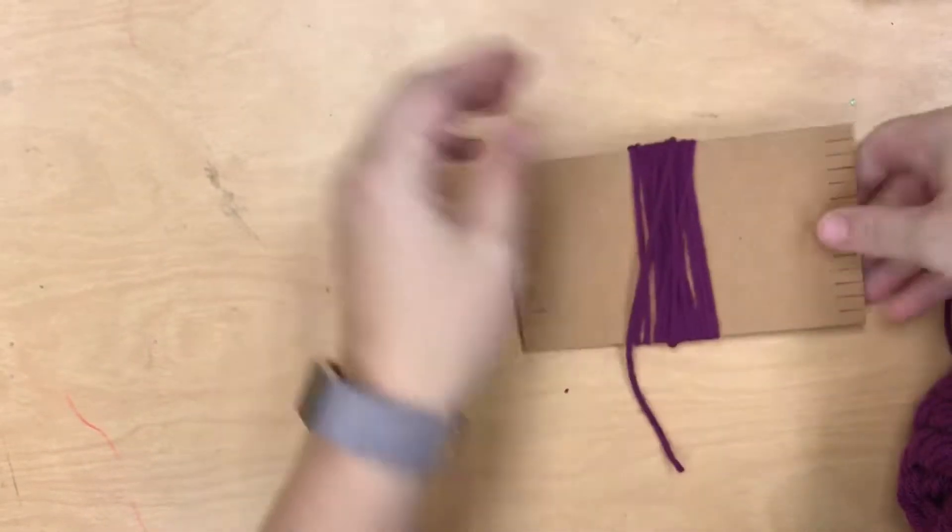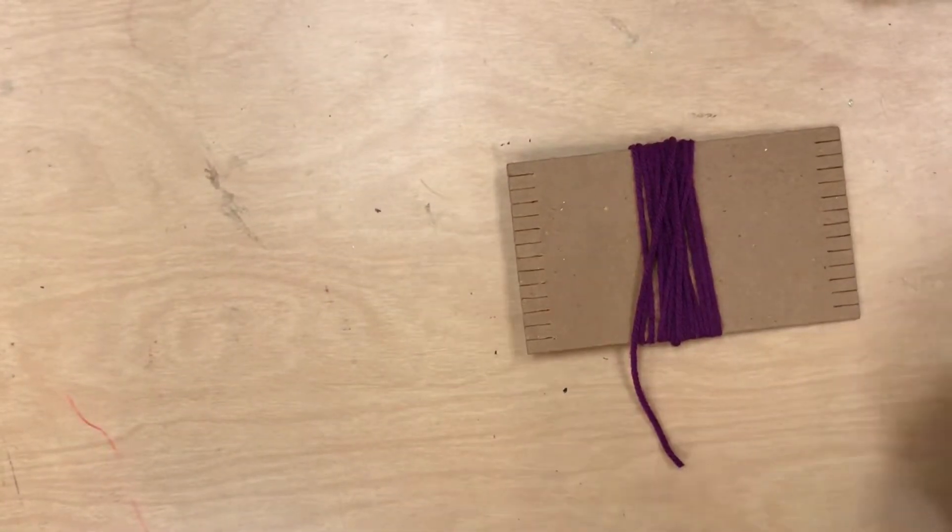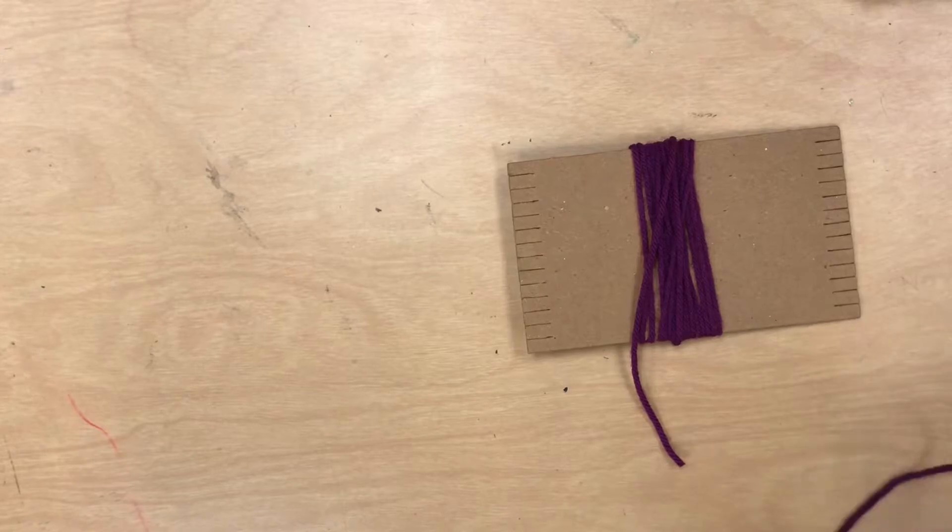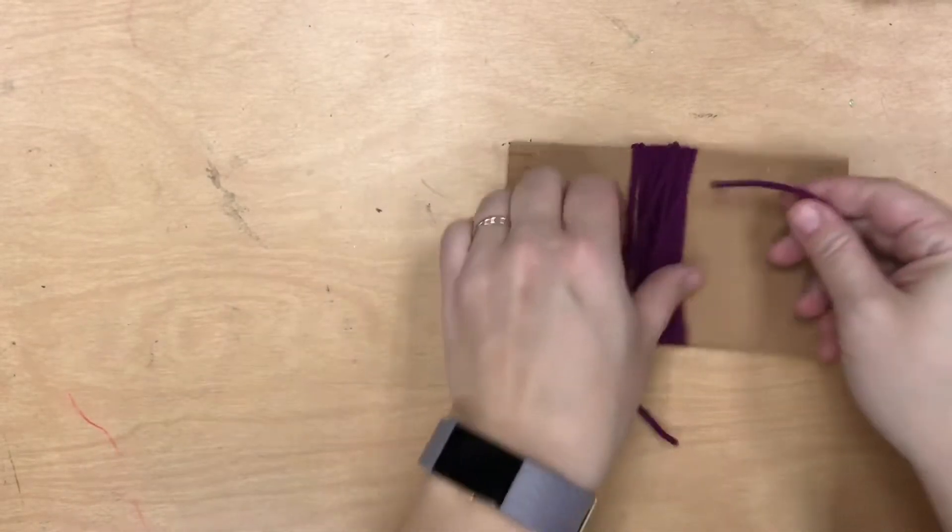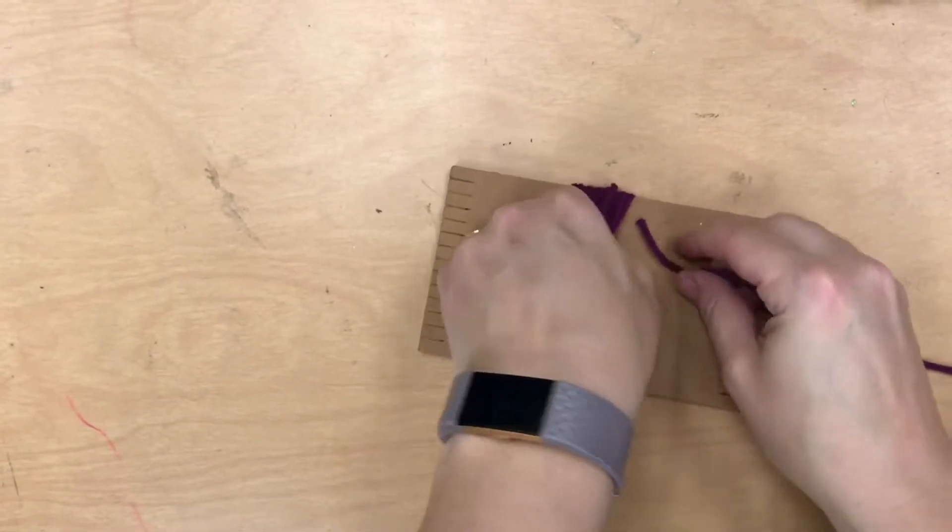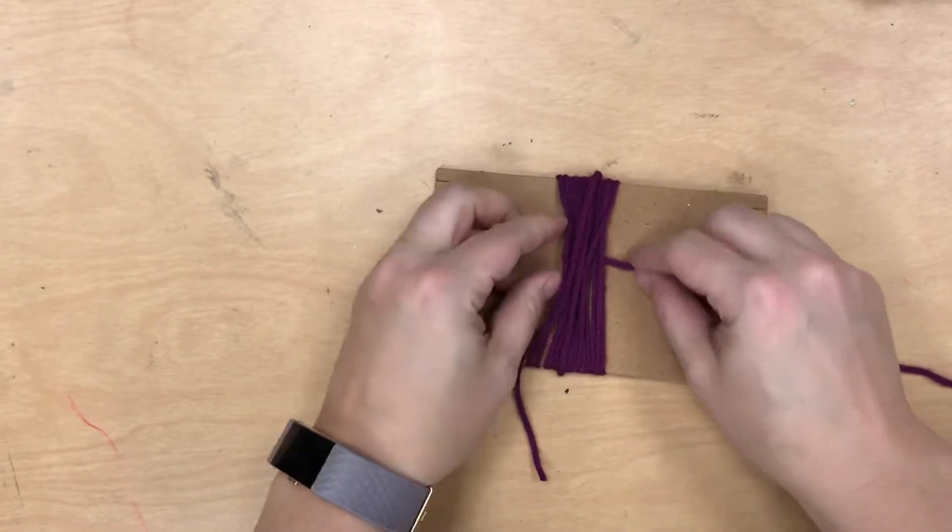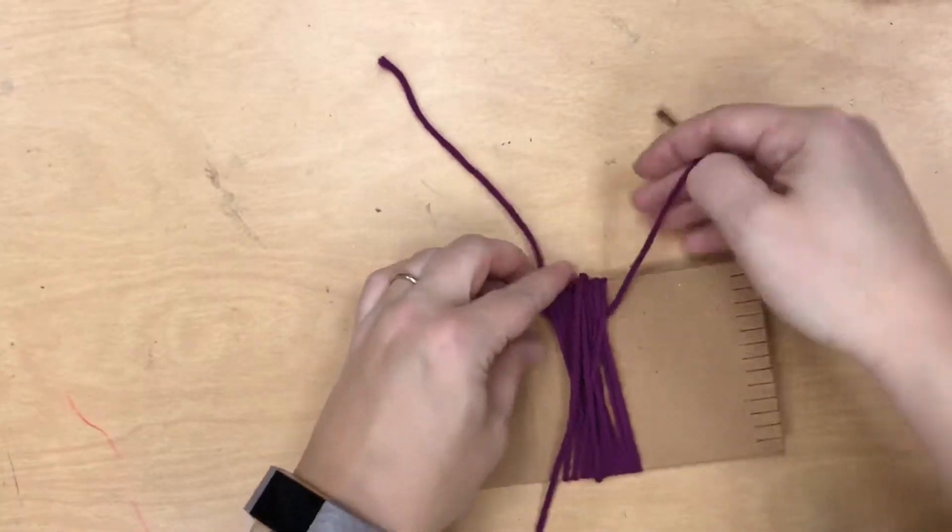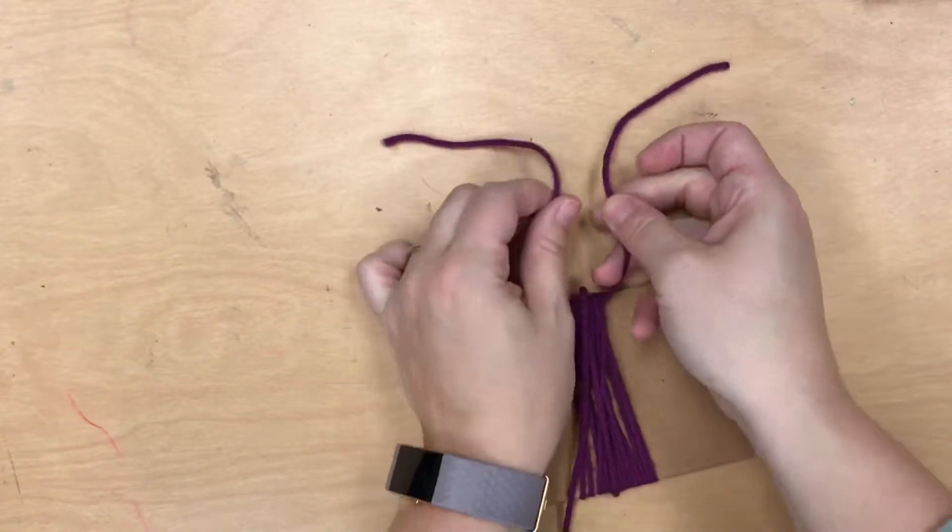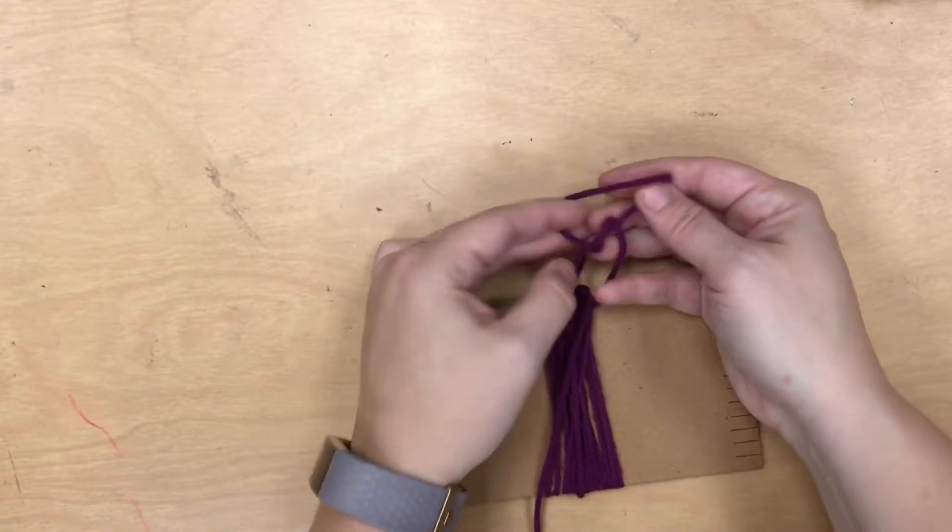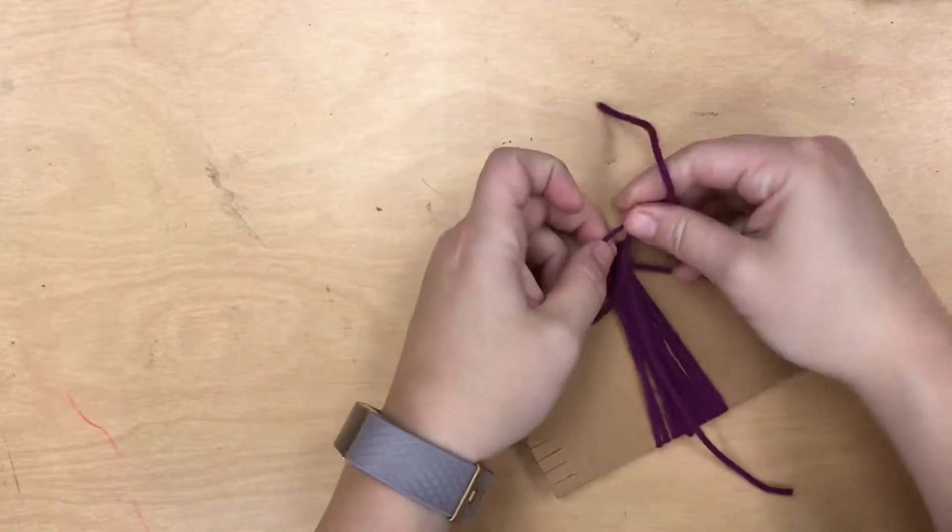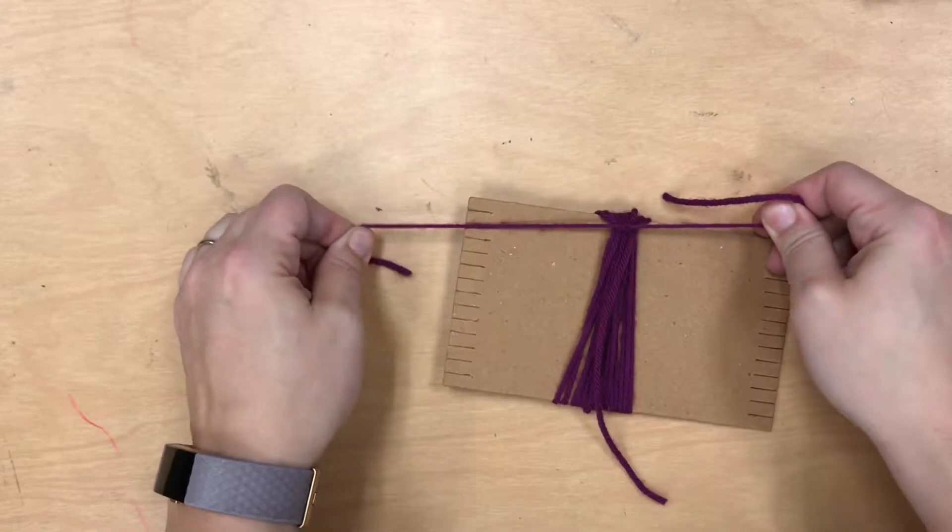Once you have the tassel the size you want, you can cut off any extra yarn. Now is the time when you can take a new piece of short yarn and put it through all of those loops you just made. Then we want to tie a knot so that we can cinch together one end of those loops. I cross my yarn over, put one through, and do a double knot.